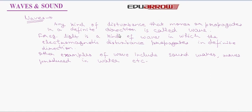For example, light is a kind of wave in which the electromagnetic disturbance propagates in a definite direction. Other examples of waves are sound waves, waves produced in water, etc.